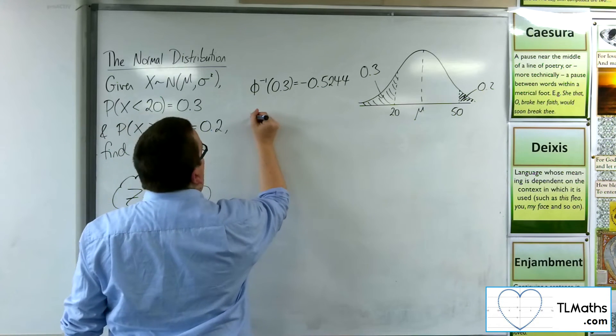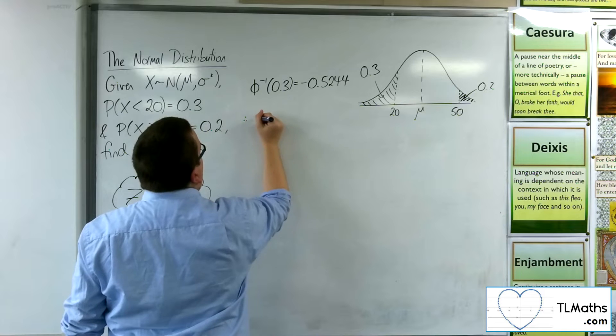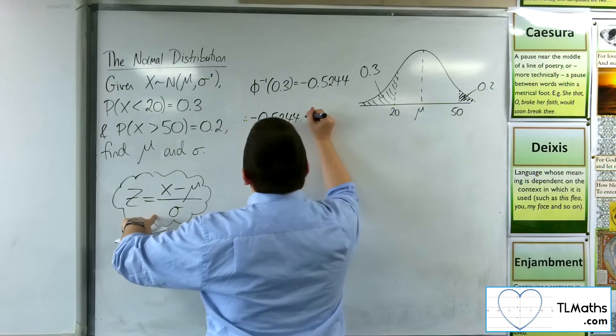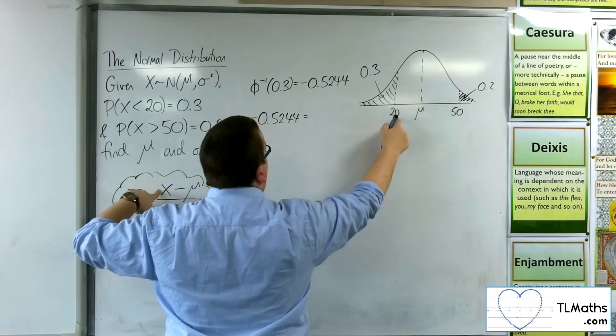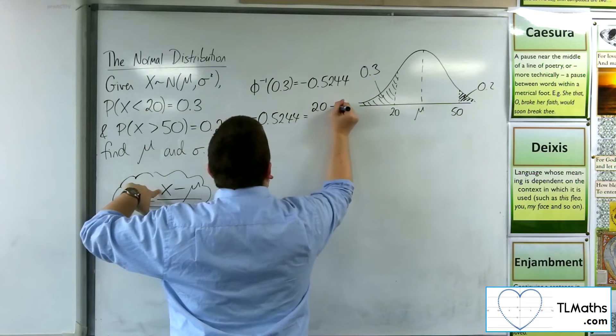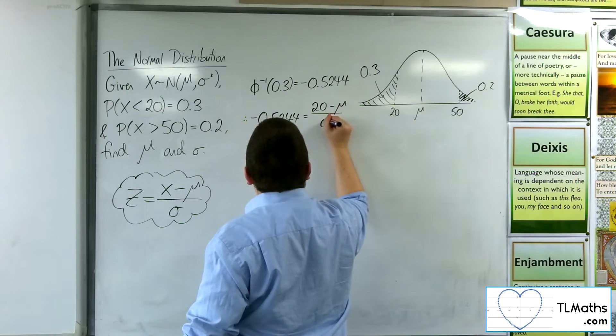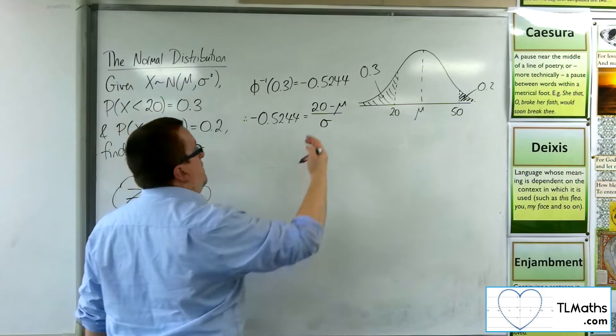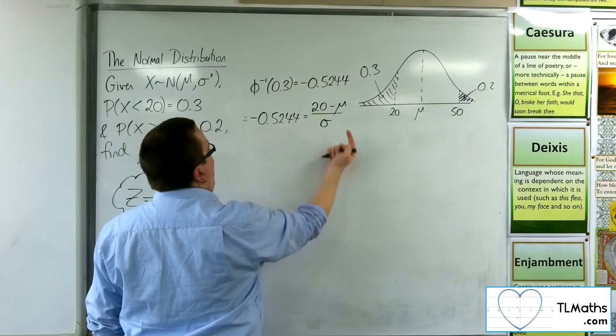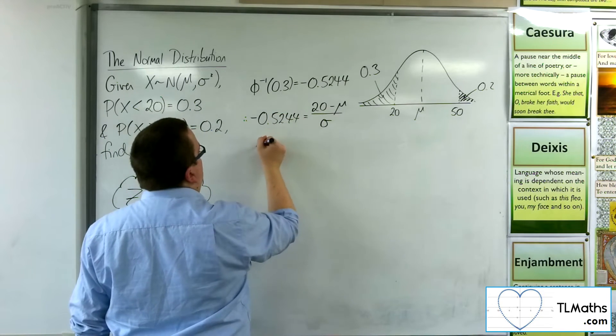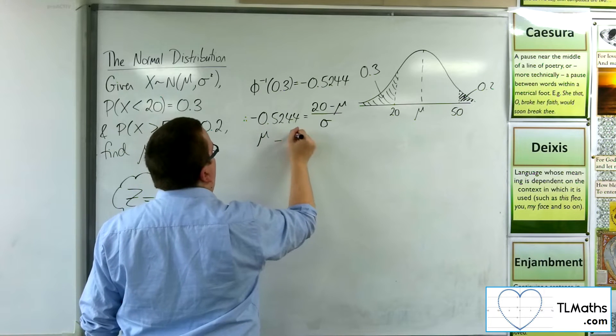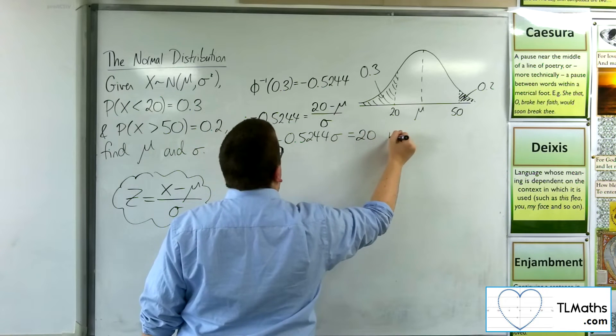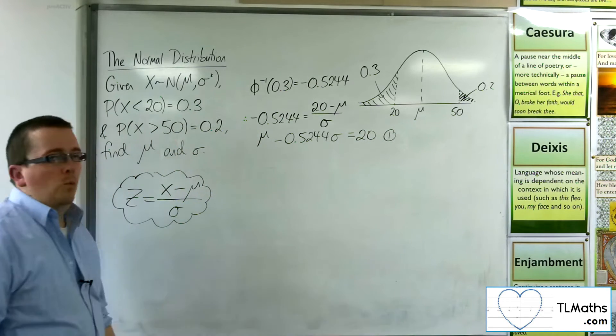So we have, therefore, minus 0.5244. That's my z value. Is equal to the x value, which I know is 20. Take away the mean divided by the standard deviation. So what I can do is I can rearrange that. Multiply by the σ. Add the μ. So I get μ take away 0.5244 σ is equal to 20. And this will be equation number 1.